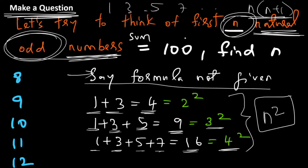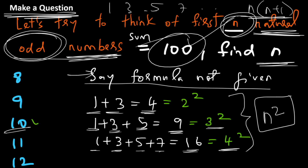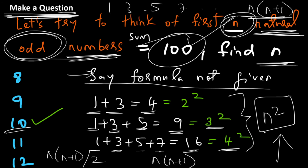Now it's given that this sum equals 100, so n² = 100, which means n = 10. We have solved the question and the correct answer is 10. Let's quickly revise: the sum of the first n natural numbers is n(n+1)/2; the sum of the first n even natural numbers is n(n+1); and the sum of the first n odd natural numbers is n², which is what we found here.